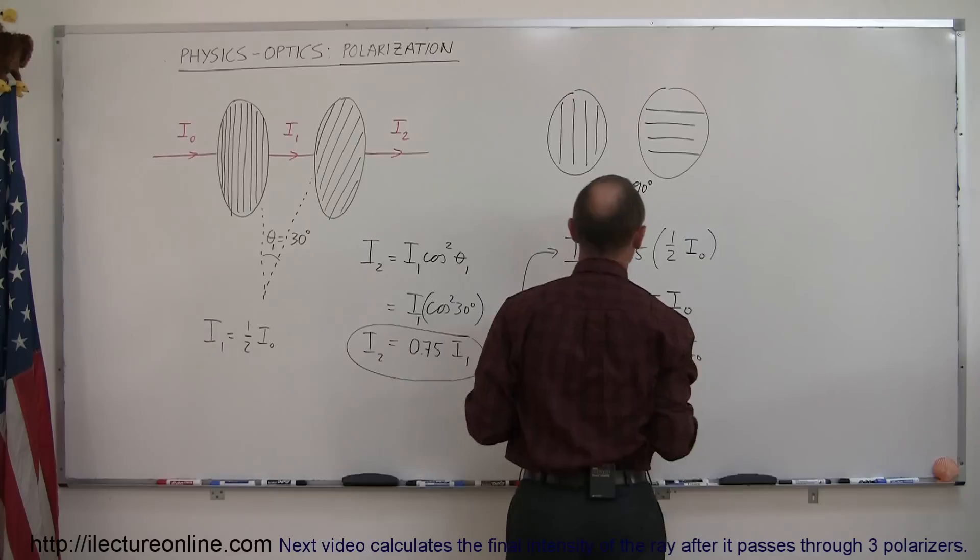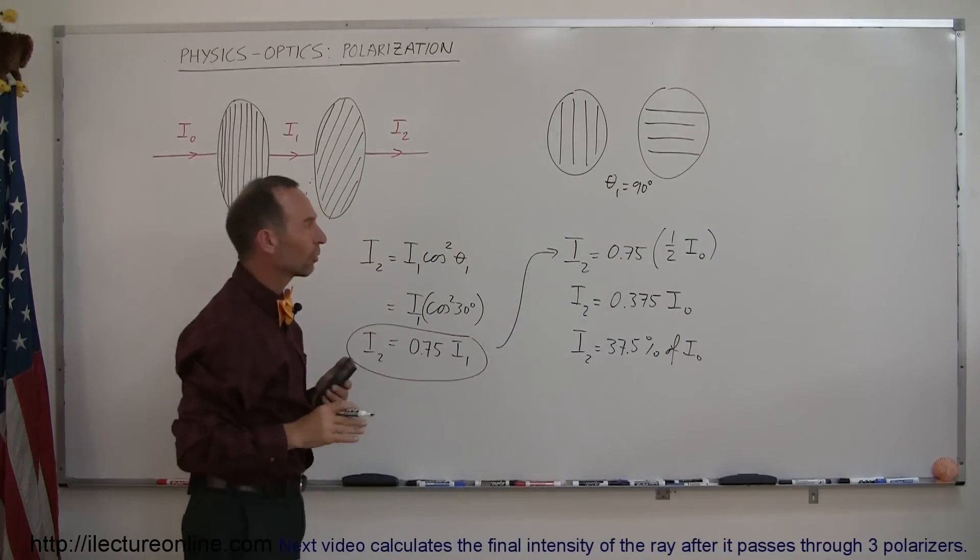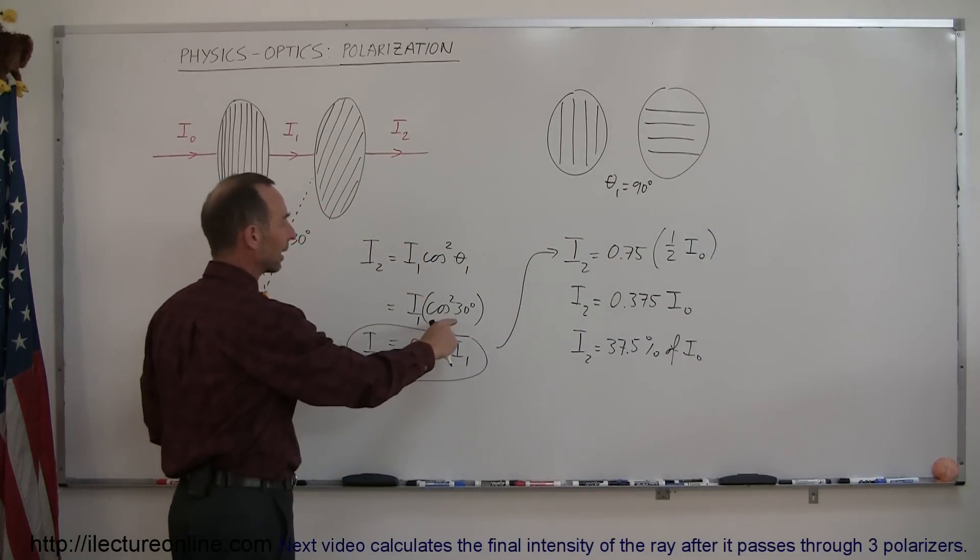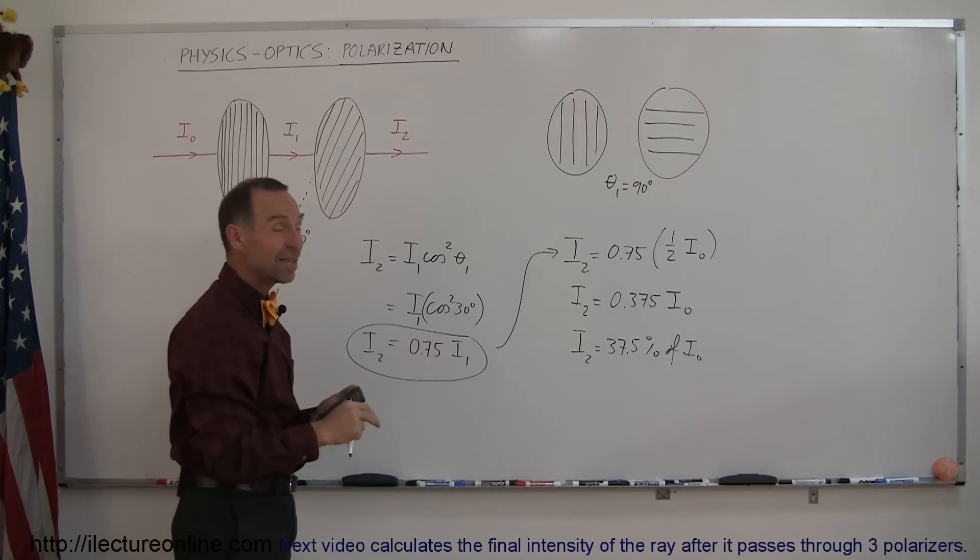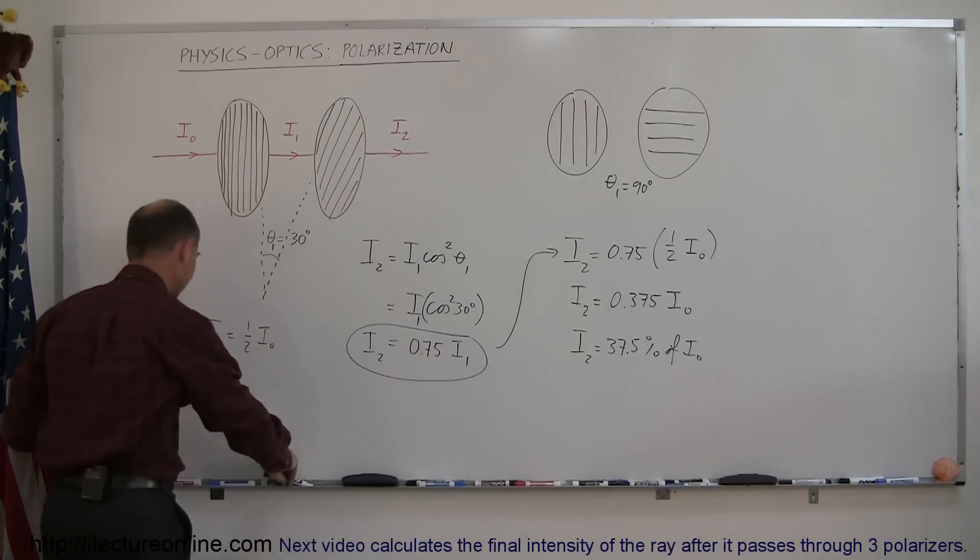is now equal to 90 degrees, and I think you already know what's going to happen because if we then plug in 90 degrees for the cosine, the cosine of 90 degrees is 0, which means no intensity, no light makes it through whatsoever.